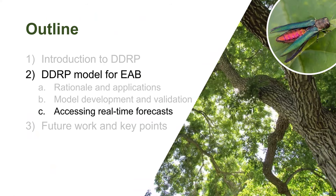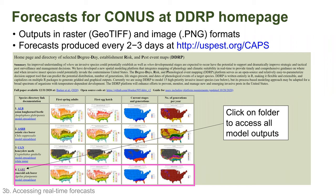Now, importantly, I want you to know how to access real-time forecasts. What I was just showing you was just for 2021, but these forecasts are more useful for the current year for decision support. This is the DDRP homepage — you can click on the EAB folder, EAB2, and access every single model output from DDRP. You can also click on columns to view phenological event maps, current stage and generations maps, and number of generations per year. They're updated every two to three days, always available at uspest.org/caps.